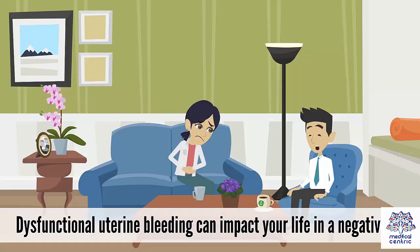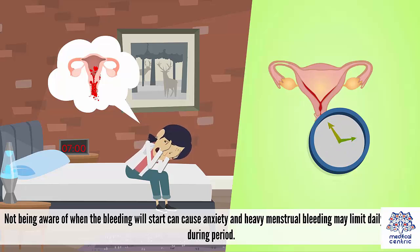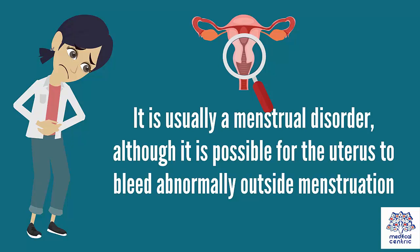Dysfunctional uterine bleeding can impact your life in a negative way. Not being aware of when the bleeding will start can cause anxiety, and heavy menstrual bleeding may limit daily activities during a period. It is usually a menstrual disorder, although it is possible for the uterus to bleed abnormally outside of menstruation.